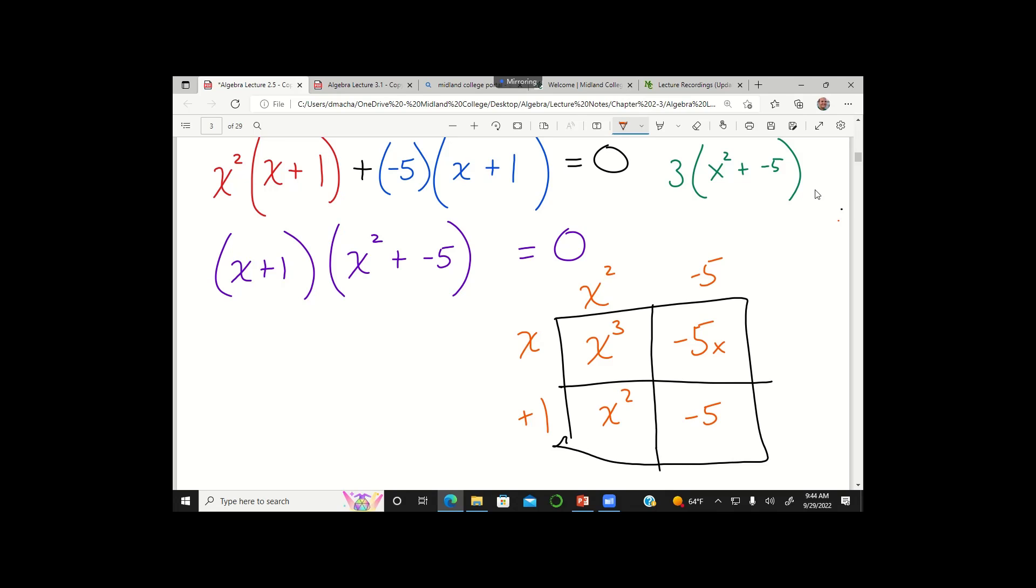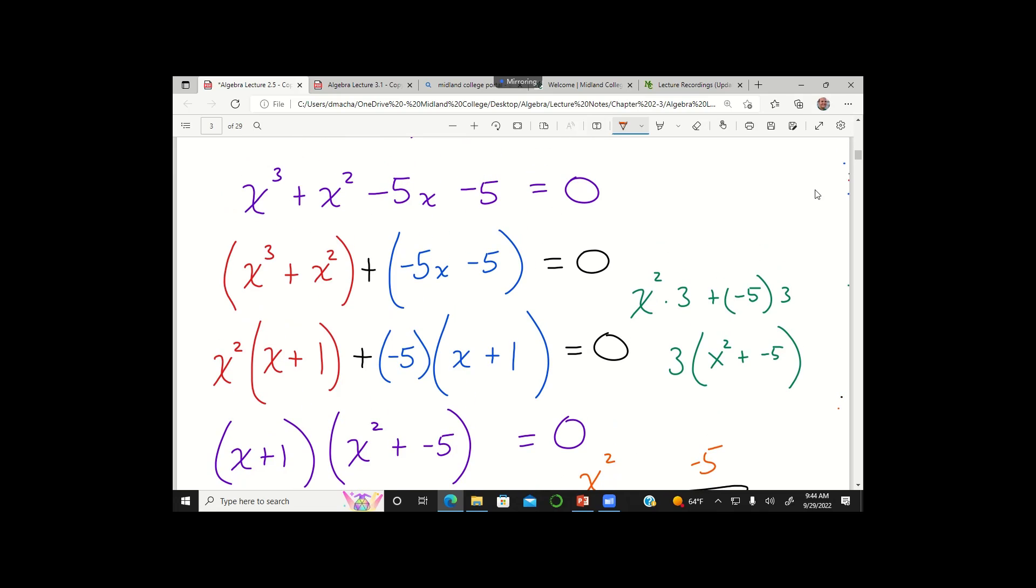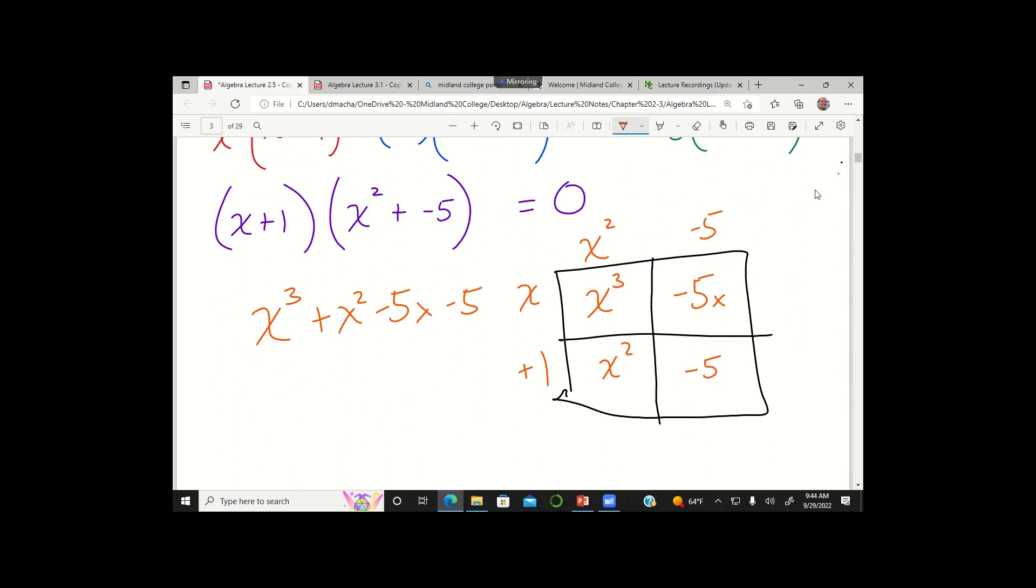So adding up these boxes, what I would get is x cubed plus x squared minus 5x minus 5. And that is what we had up here, right? x cubed plus x squared minus 5x minus 5. And so that would be a way to check your work. If you're not really sure of that step, you want to make sure you did it right, you can multiply these factors back out and just make sure that you get what you started with. Good question.